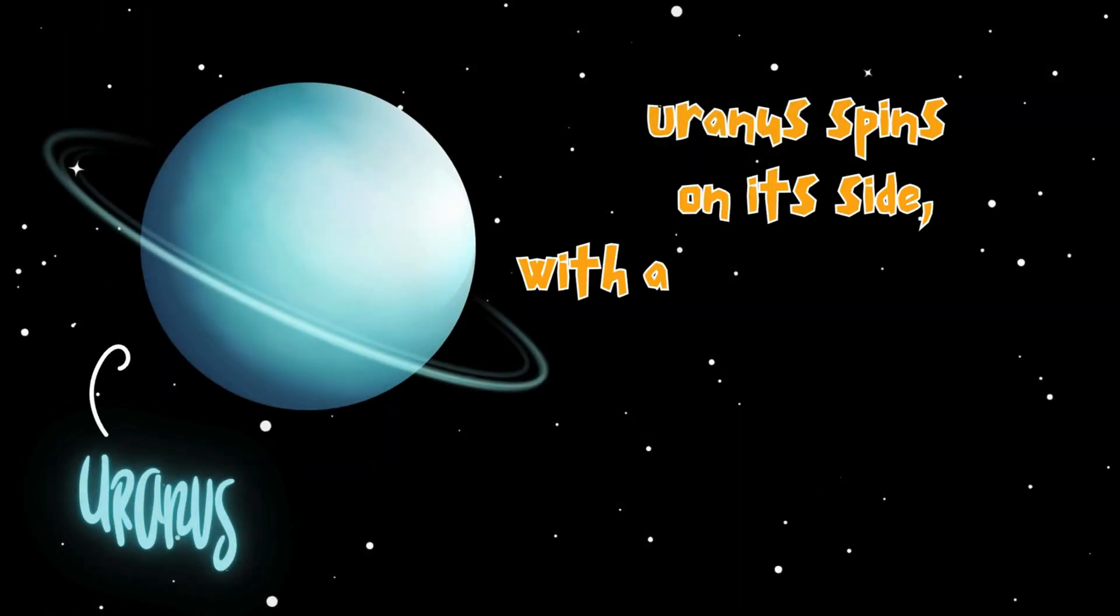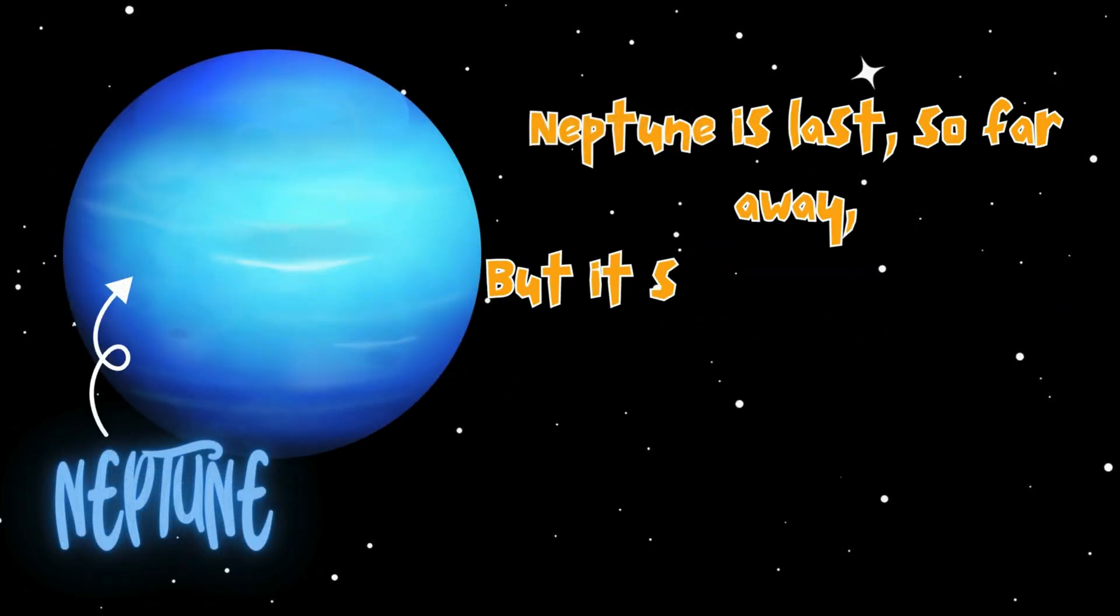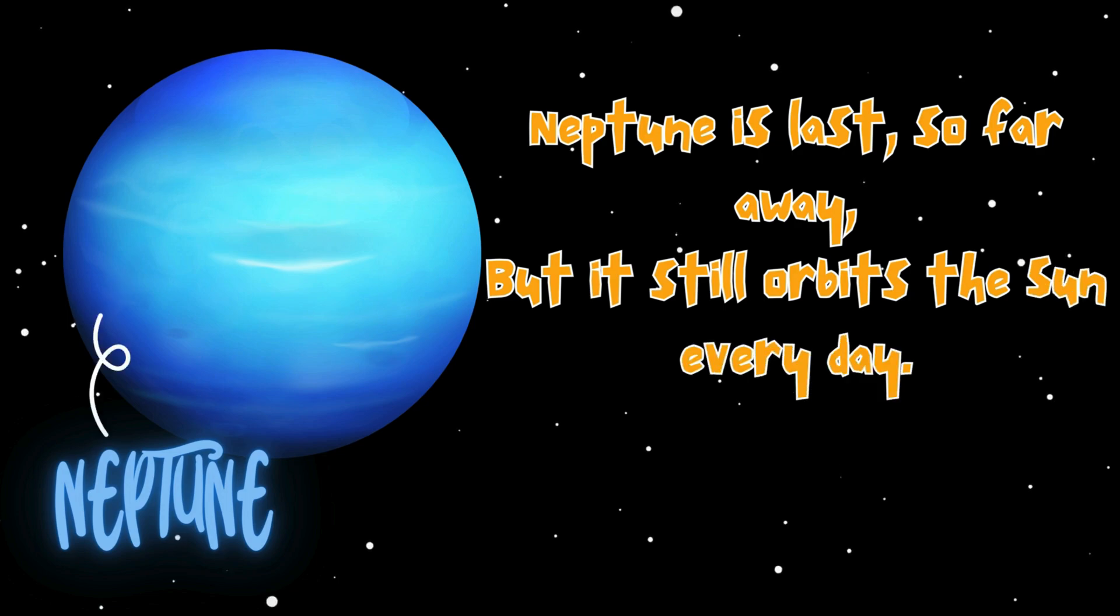Uranus spins on its side, with a blue-green color it likes to hide. Neptune is last, so far away, but it still orbits the sun every day.